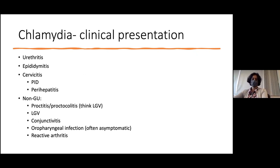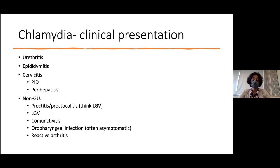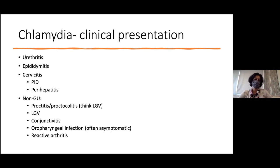The classical presentations of chlamydia include urethritis, which is generally asymptomatic but can present with dysuria, UTI symptoms, or mucopurulent urethral discharge. Epididymitis presents as unilateral scrotal pain and swelling. Cervicitis is frequently asymptomatic, which is why regular screening is essential. Extra-genital presentations include proctitis, proctocolitis, LGV, conjunctivitis, oropharyngeal infection — often asymptomatic — and reactive arthritis.